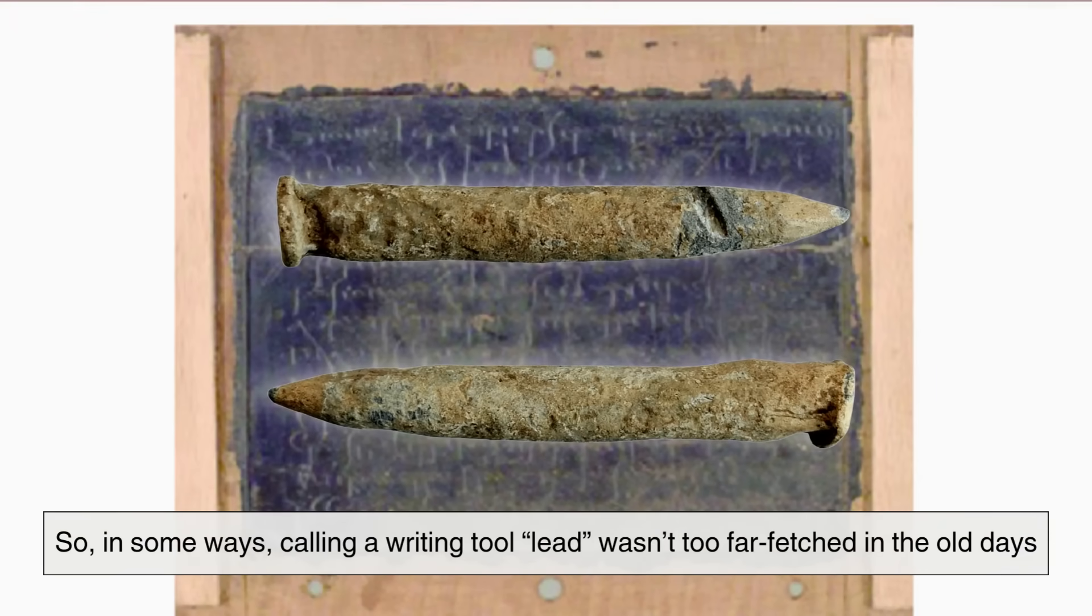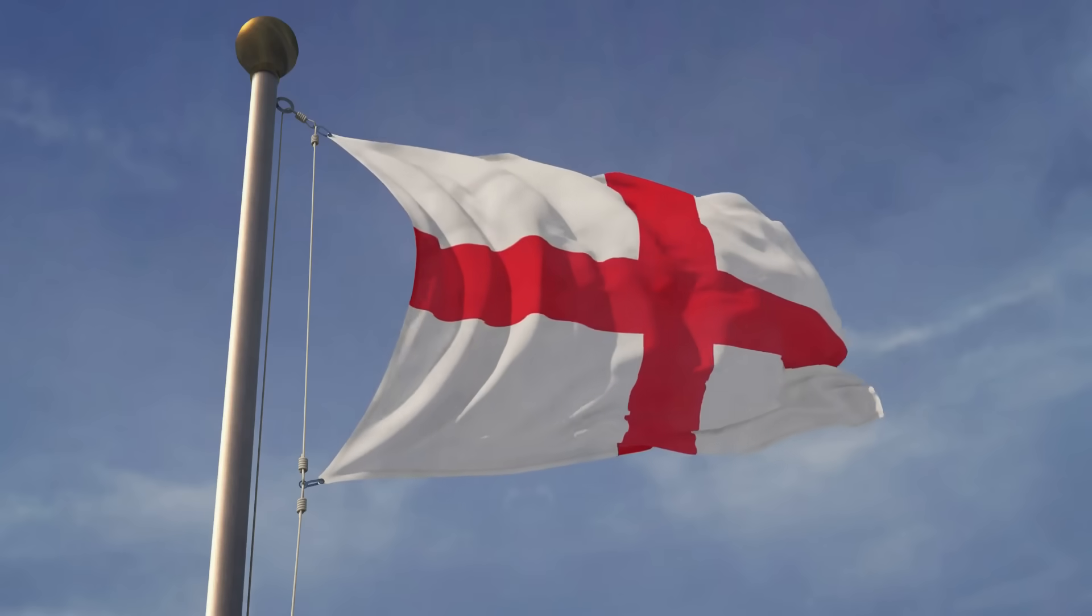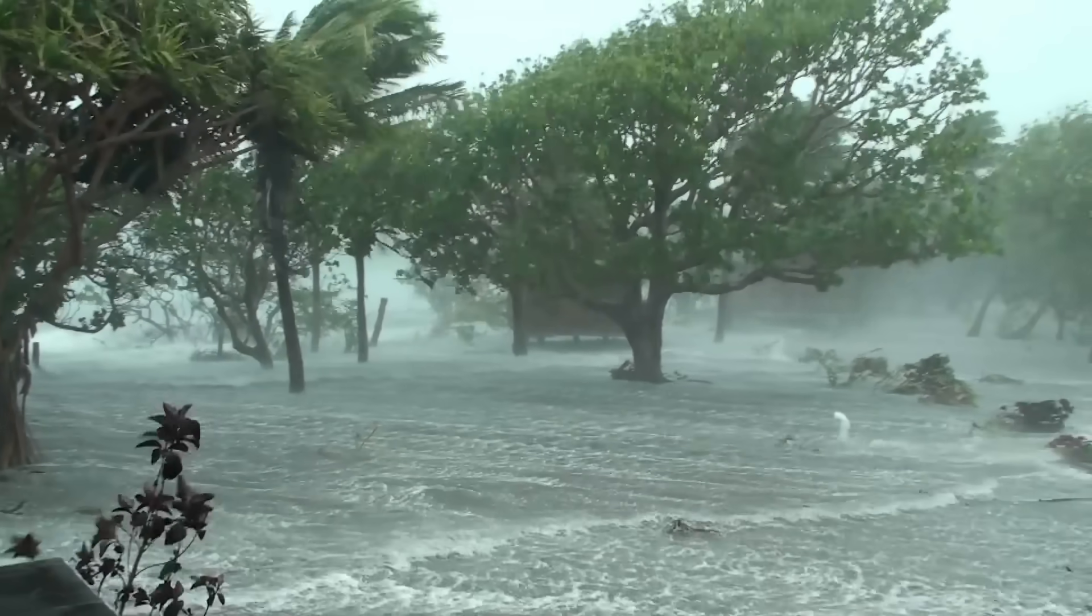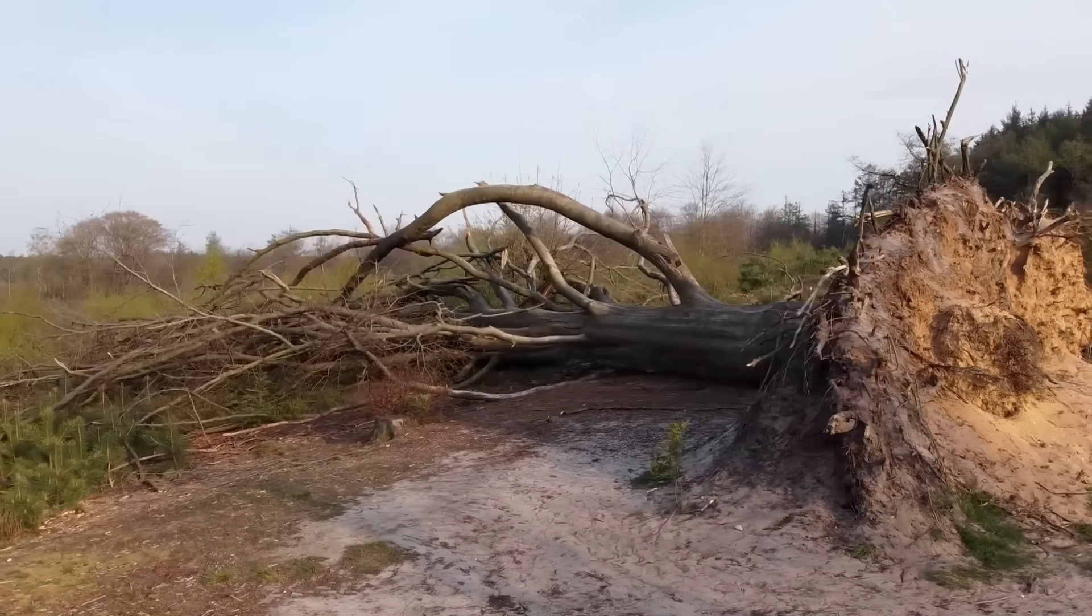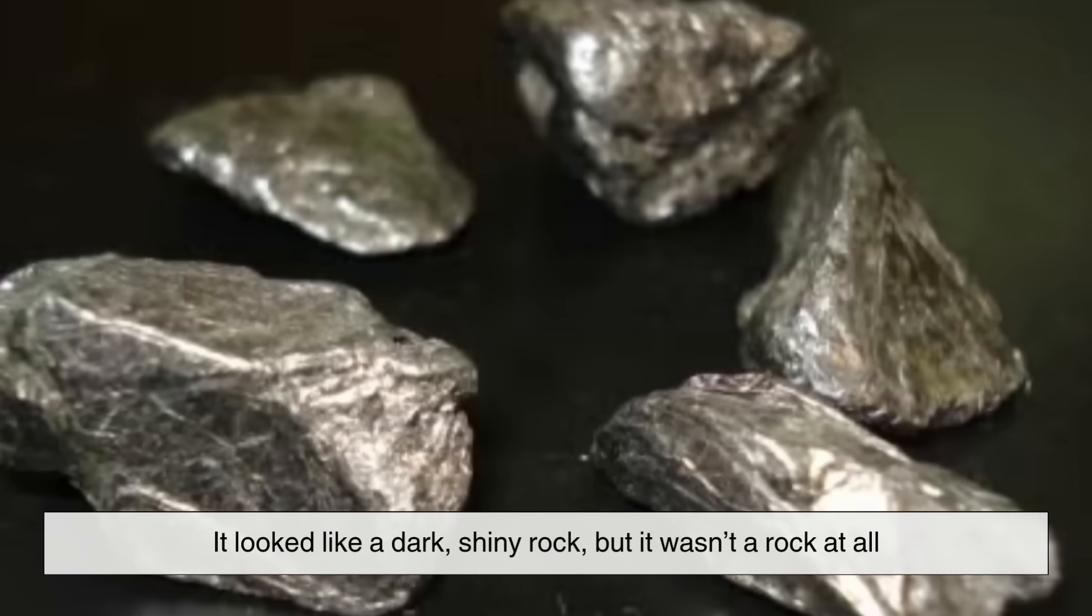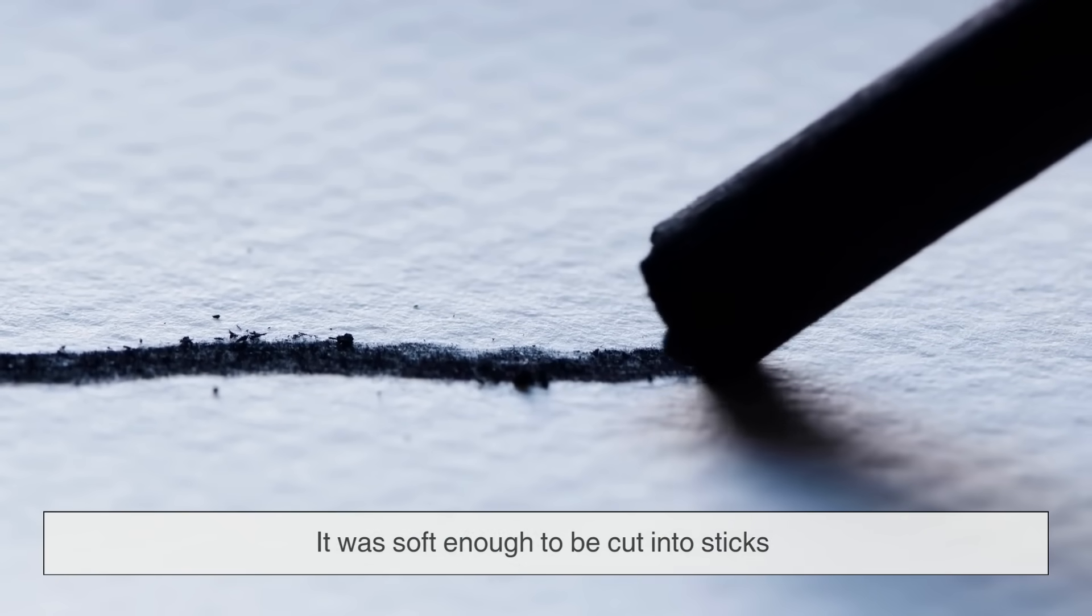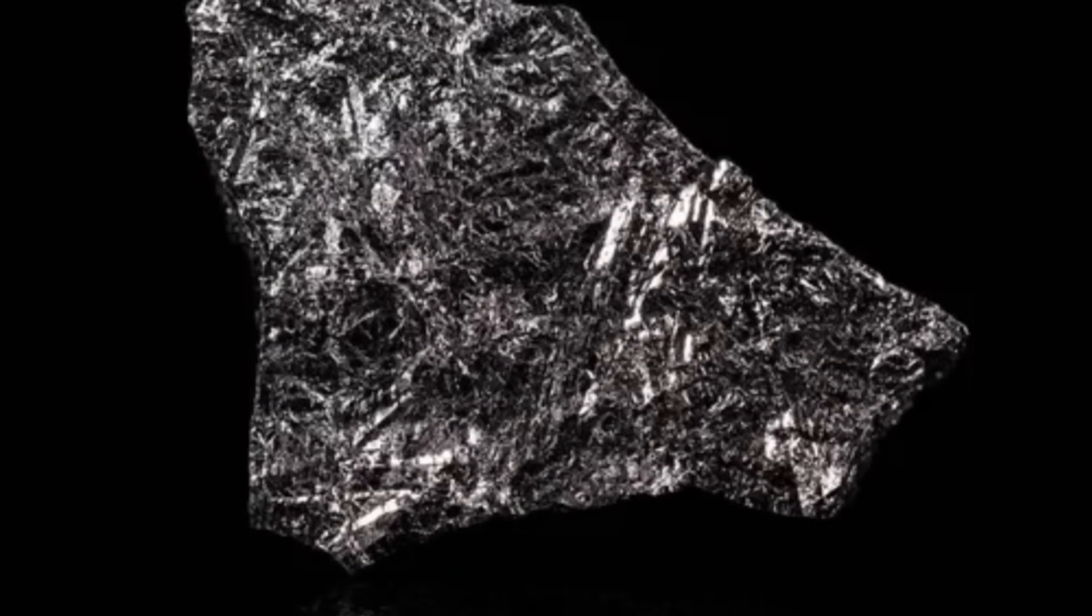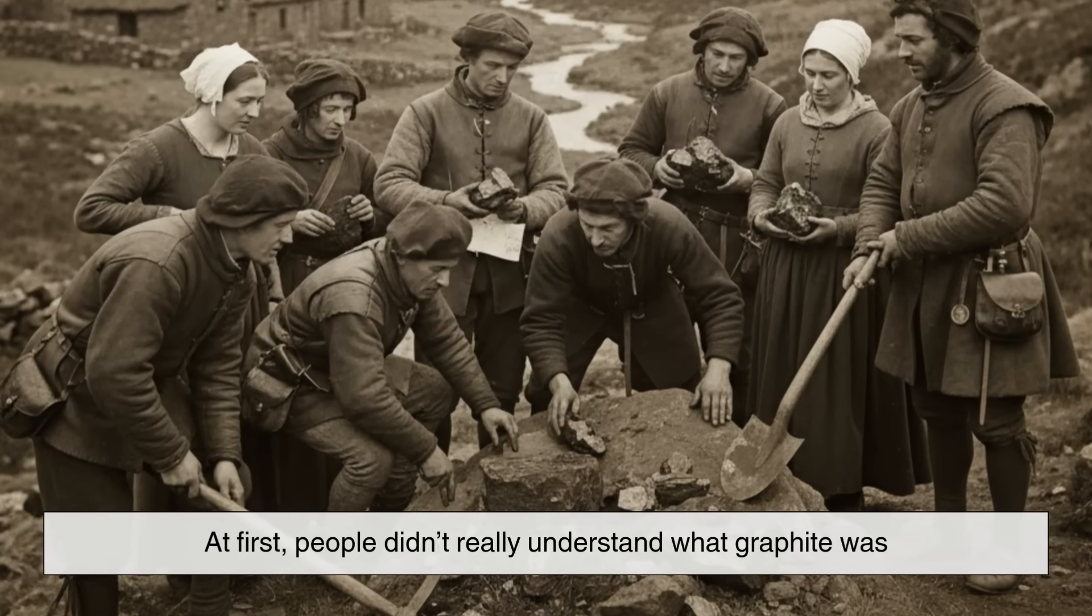Fast forward to the 1500s in England. A storm uprooted a tree in the countryside of Borrowdale, and beneath the ground, locals stumbled upon something strange. It looked like a dark shiny rock, but it wasn't a rock at all. It was soft enough to be cut into sticks and left black marks on paper and sheep's wool. This material was graphite. At first, people didn't really understand what graphite was.